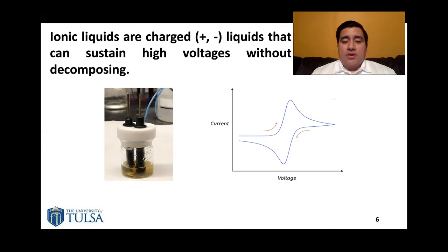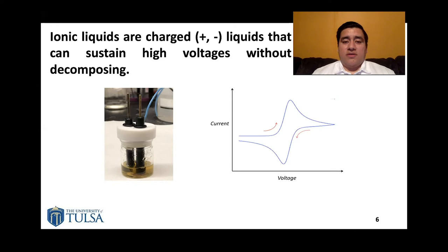They're also relatively cheap to synthesize compared to other methods used in the industry. The picture on the right shows the technique known as cyclic voltammetry, where we measure the voltage windows of these ionic liquids, while the picture on the left shows the setup for the electrodeposition experiments used to try to obtain crystalline silicon from sand.